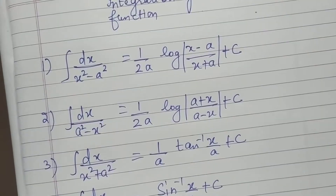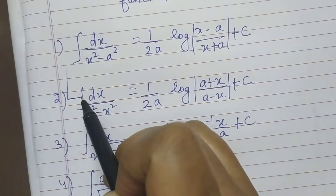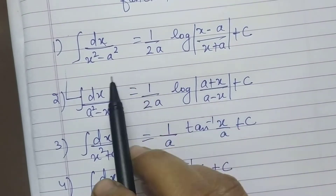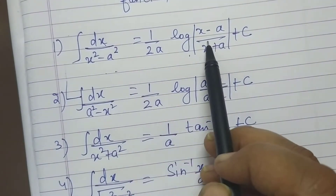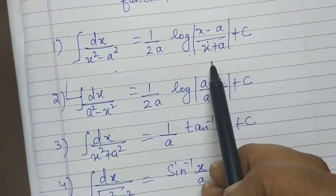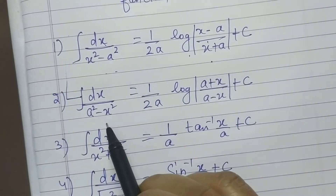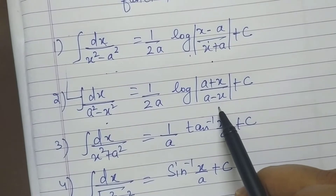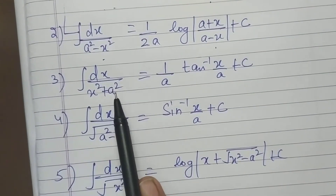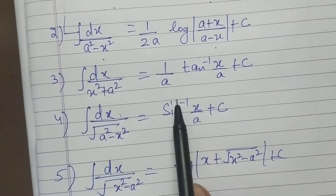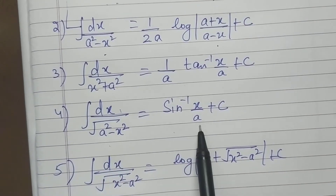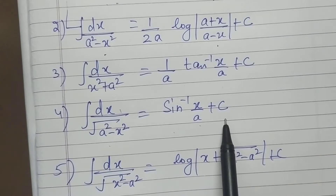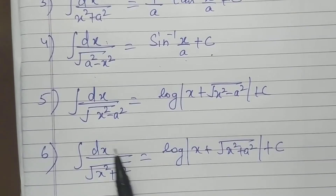How can you learn these formulas? The first two are almost the same — both have 1/(2a) log. The difference is x² minus a² versus a² minus x². An important thing to observe: in all these formulas, the coefficient of x² must be unity — that means it must be 1.